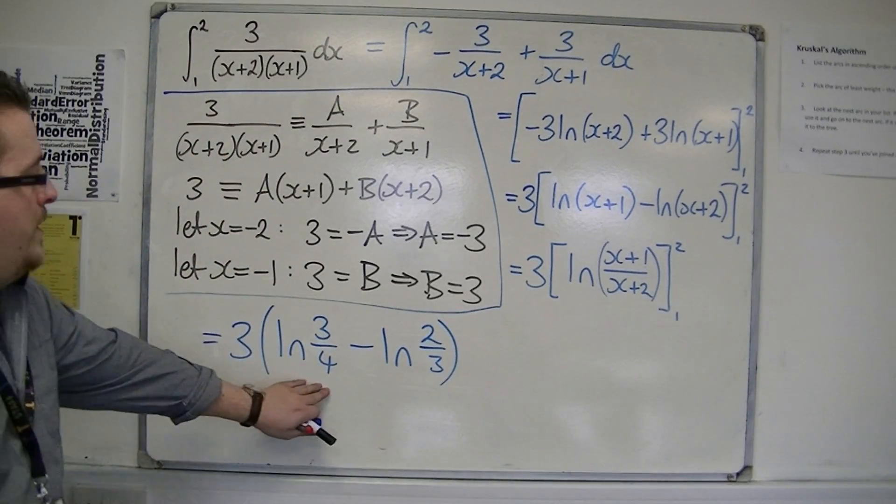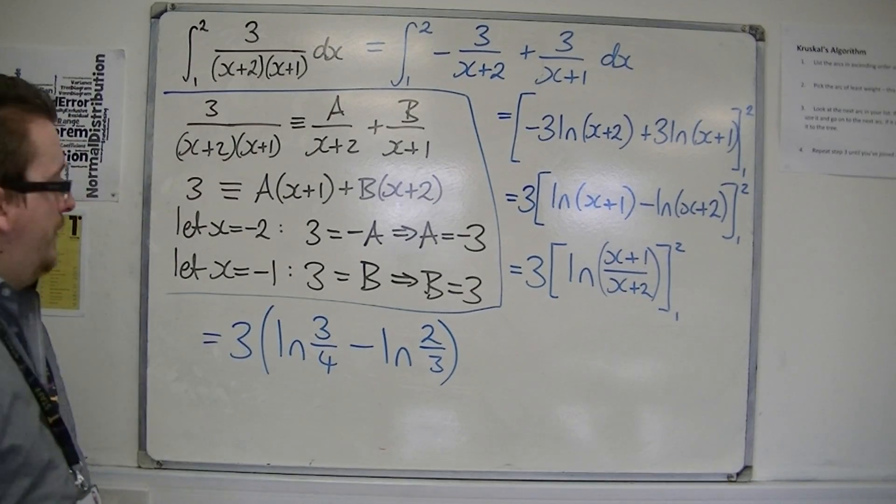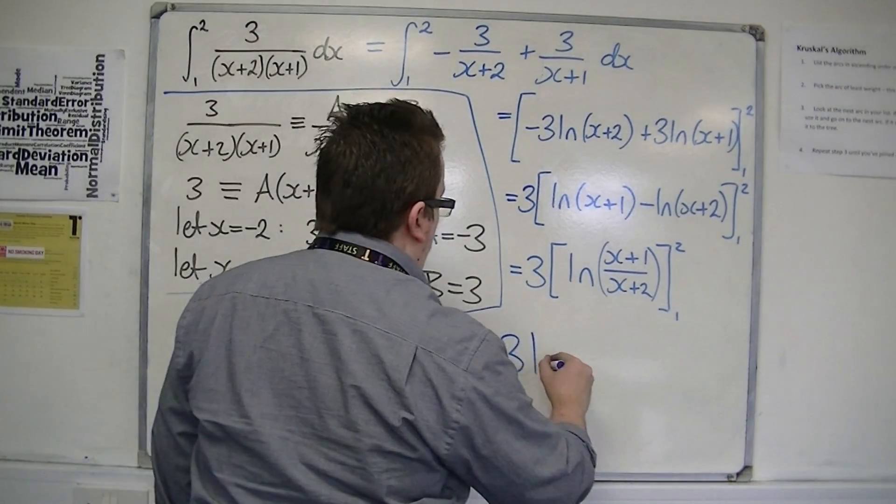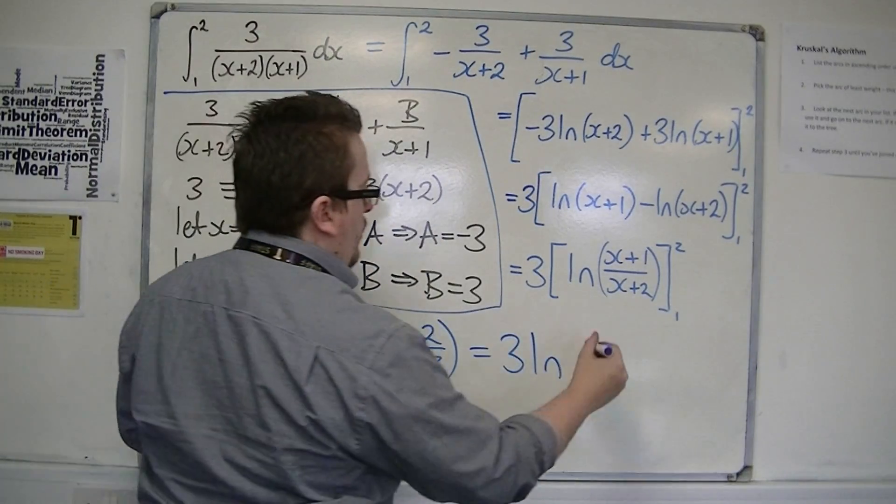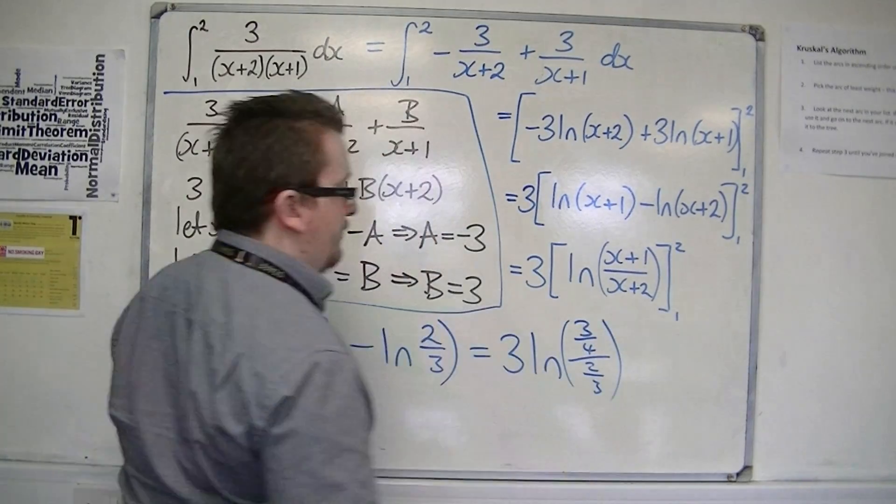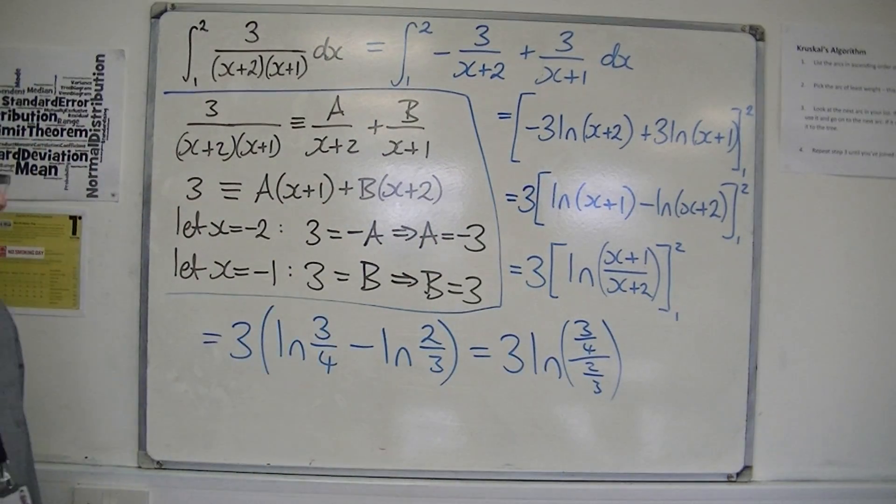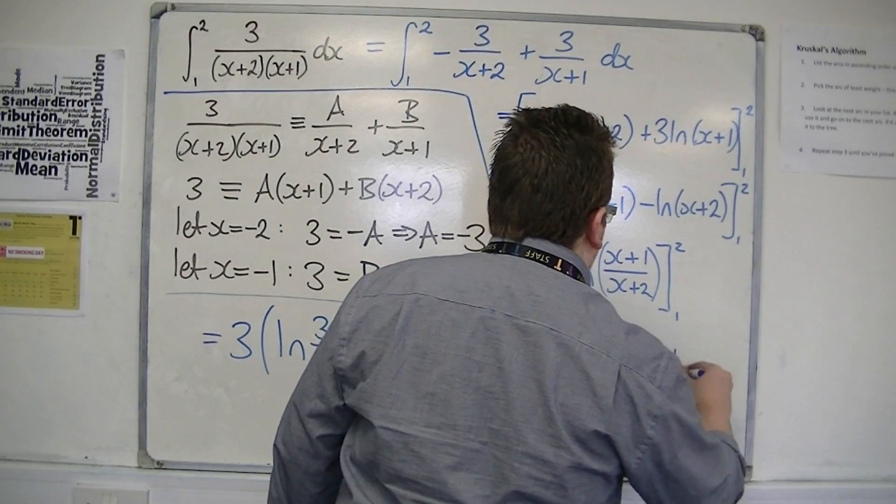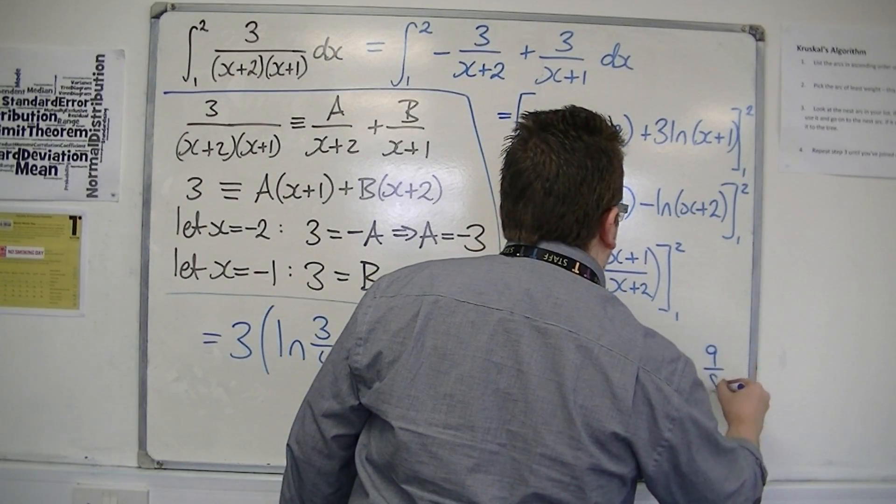Okay, ln of 3/4, take away, substituting in 1, I get 3 times ln of (3/4)/(2/3), which is 9/8. So that's 3 ln(9/8).